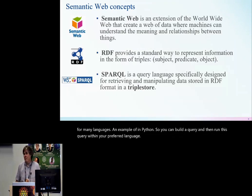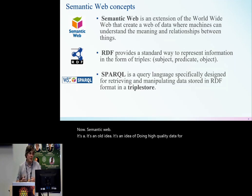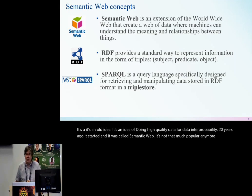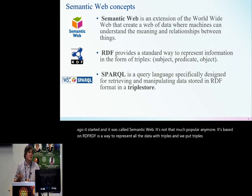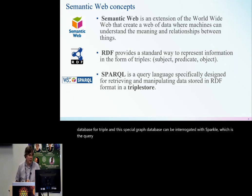Now, Semantic Web. It's an idea of doing high-quality data for data interoperability. It started 20 years ago and was called the Semantic Web — it's not that popular anymore. It's based on RDF, which is a way to represent all data as triples. We put triples into a triplestore — a database for triples. This special graph database can be queried with SPARQL, which is the query language of triplestores.